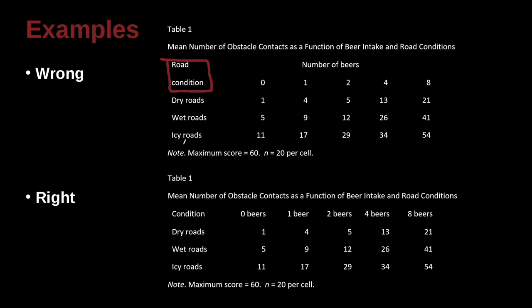Okay down here is road condition, and then here's number of beers. It's getting a little bit hard to understand. I think this is number of beers. Zero beers, one beer, two beers, four beers, eight beers.